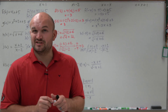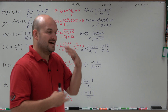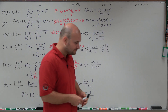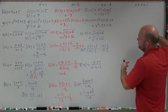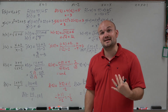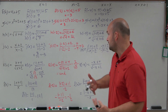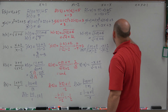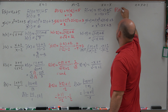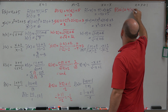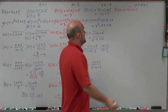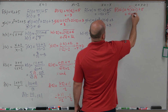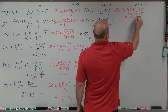Last but not least — and this is the one that involves the most algebra — is evaluating for f of x plus 1. This kind of work really prepares you for later mathematics. For f of x plus 1, we have 4 times the quantity x plus 1, plus 5. Apply the distributive property: 4x plus 4 plus 5, which equals 4x plus 9.